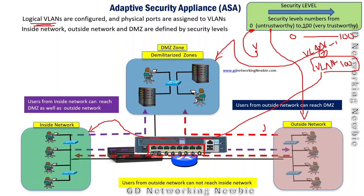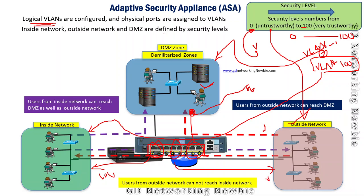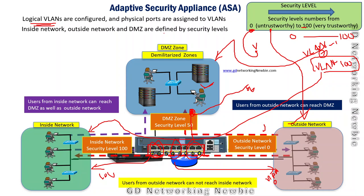The DMZ zone can be accessed by both inside and outside users. For example, if we say two ports belong to an interface with security level 50, those ports will be part of the DMZ. If two ports belong to an interface with security level 100, those will be part of the inside network. The remaining two ports assigned to an interface with security level zero will be part of the outside network. So: inside network security level is 100, outside is 0, and DMZ can be assigned something like 50 or 70.